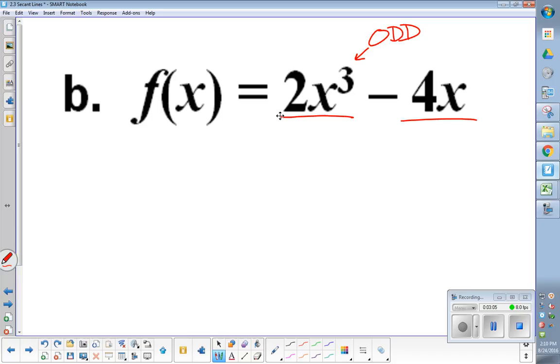Negative 4x. What's my exponent there on that x? That's a 1 because it's there. I see an x. That means it's a 1 exponent on that x. When I think 1, even or odd? Odd. Both of my equations are odd, or both my exponents are odd, so what does that mean about my function? It is an odd function.